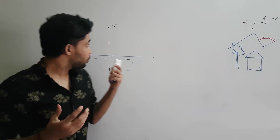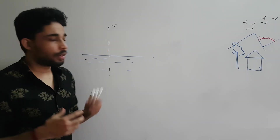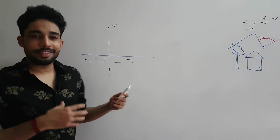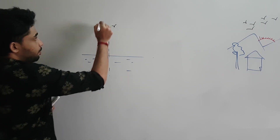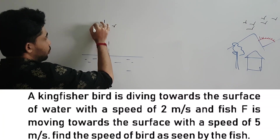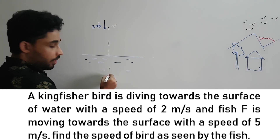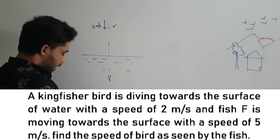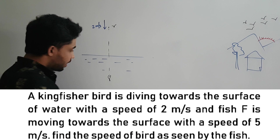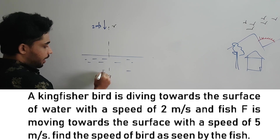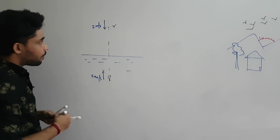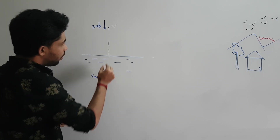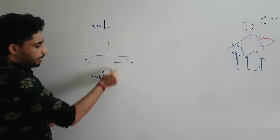But sir, you are supposed to draw a kingfisher bird. Yeah, but I only know how to draw a crow, not a kingfisher, so we'll go with the crow this time. Now, the bird has a velocity of 2 meters per second, and there's a fish underwater approaching towards the surface at 5 meters per second. They've asked what is the velocity of the bird as seen by the fish.